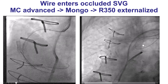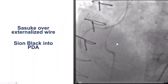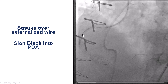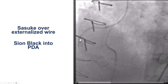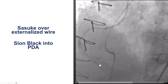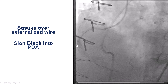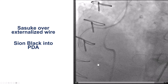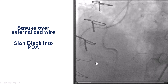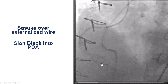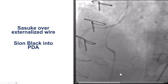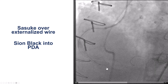The wire was then snared through another guide catheter. We then externalized the wire — an R350 — and came down with the Sasuke dual-lumen microcatheter over the externalized wire. After several attempts, the wire could now cross from the saphenous vein graft into the posterior descending artery.